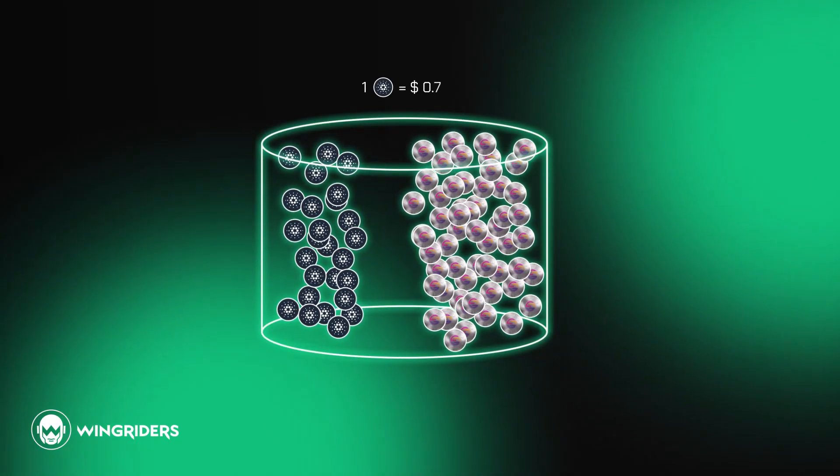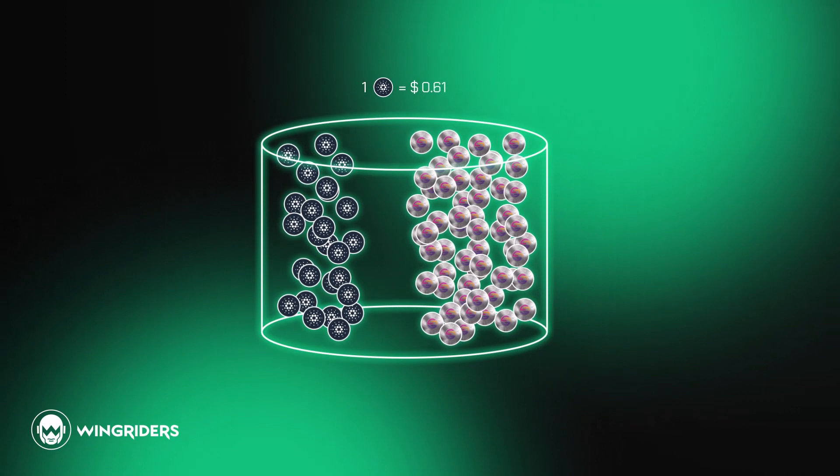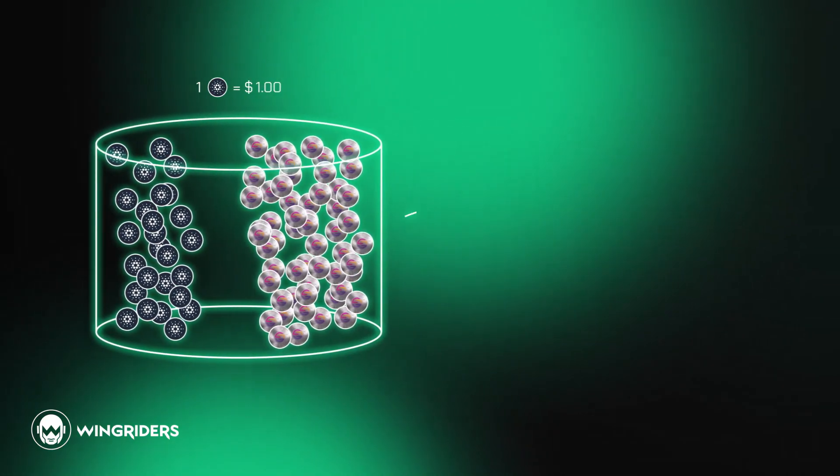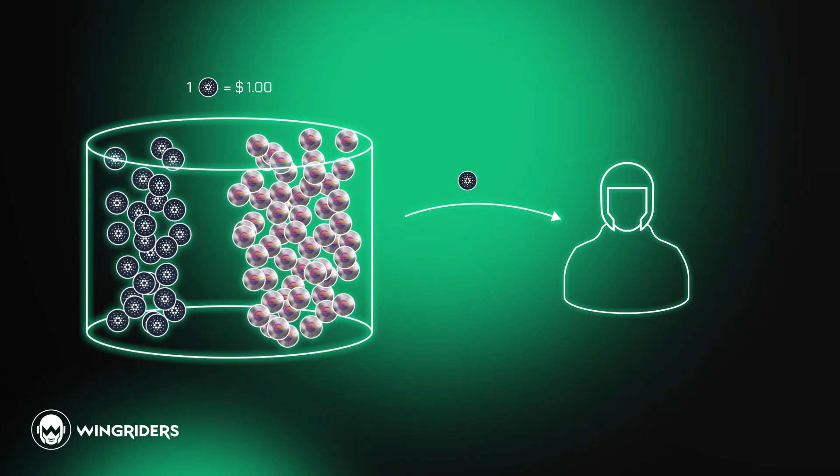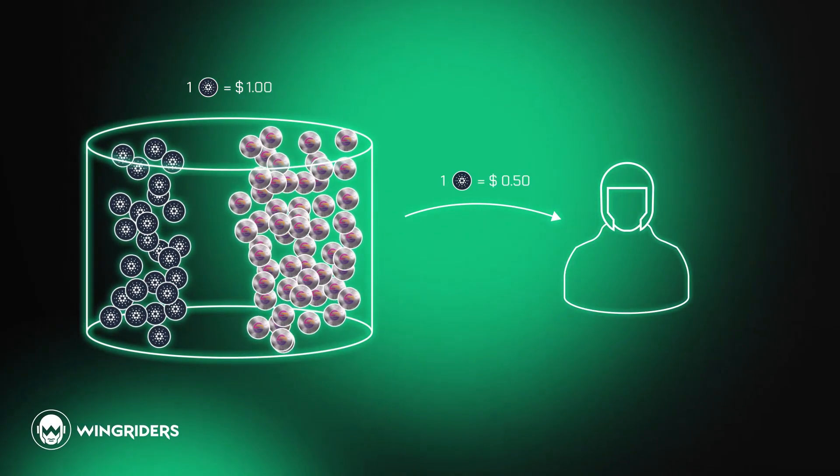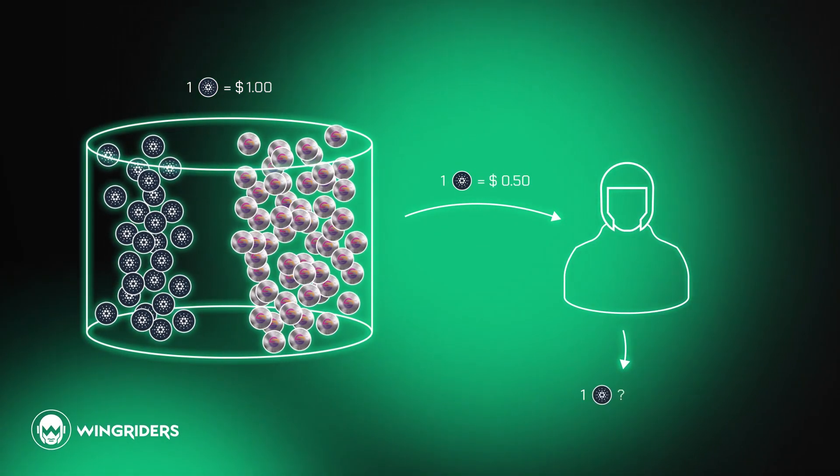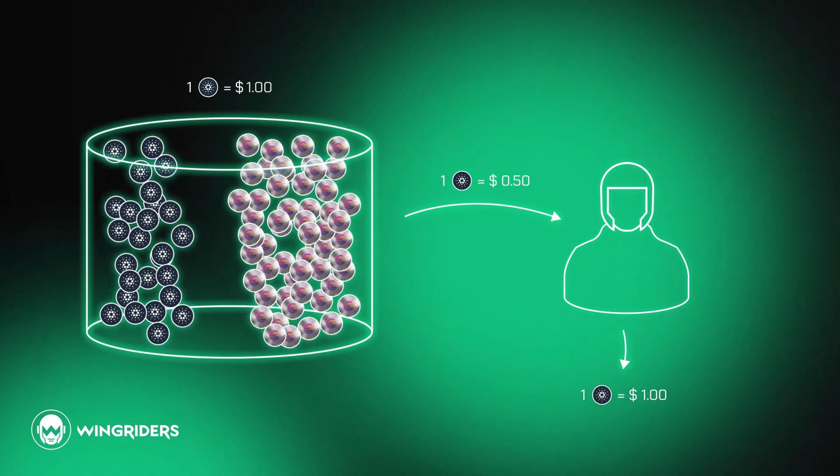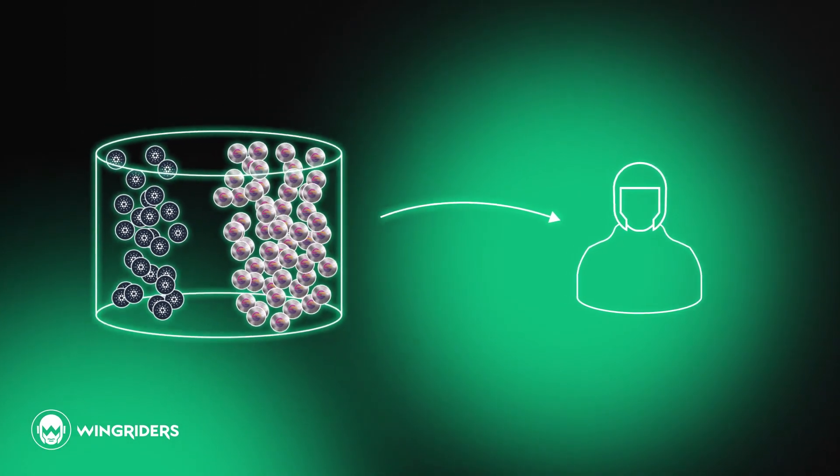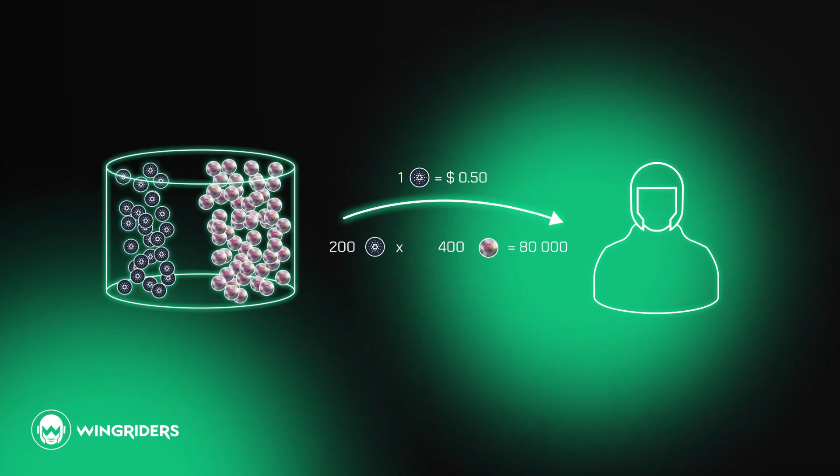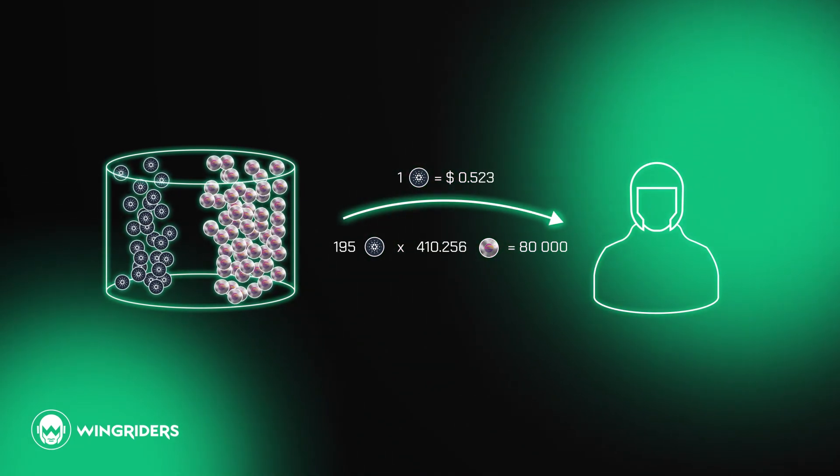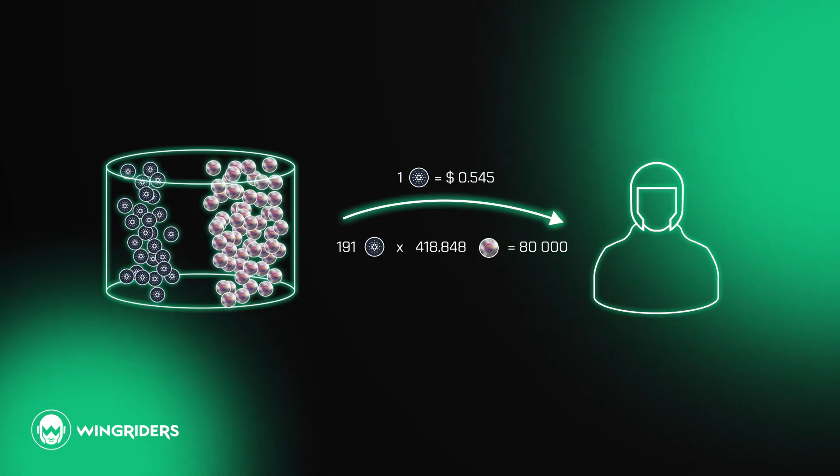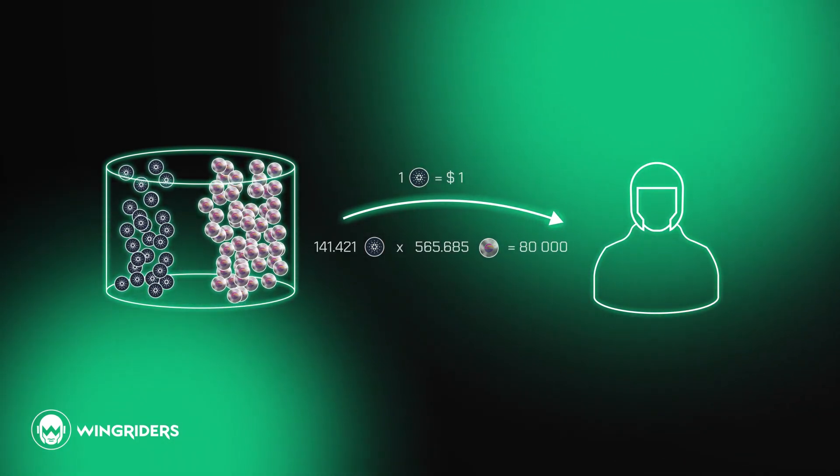Now imagine that the price of ADA rises from $0.50 to $1. This is the point where arbitragers, usually bots, come in to buy out the ADA from this pool for the original $0.50, and sell it to a different pool or exchange for $1 for their profit. They keep buying more and more, and the automated market maker will keep charging them more and more, until the value of ADA in the pool reaches $1, and it's not profitable to buy and sell it anymore.